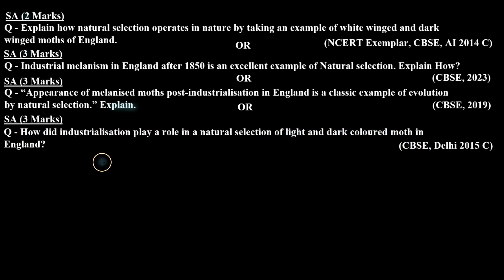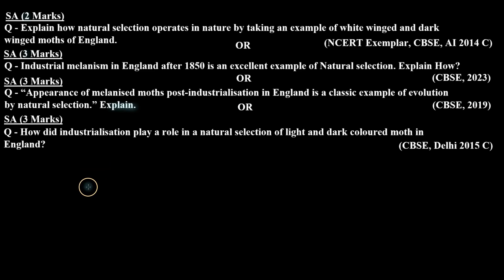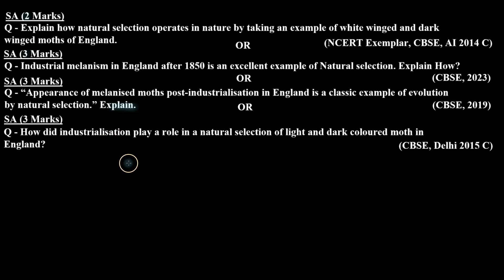So, in England, when industrialization happened, the population of dark moths increased compared to light moths. Why did this happen, and why is this an example of natural selection? Let's check the answer.